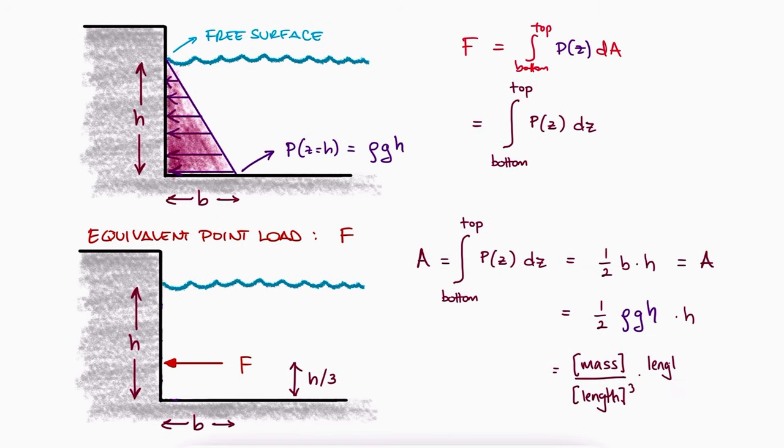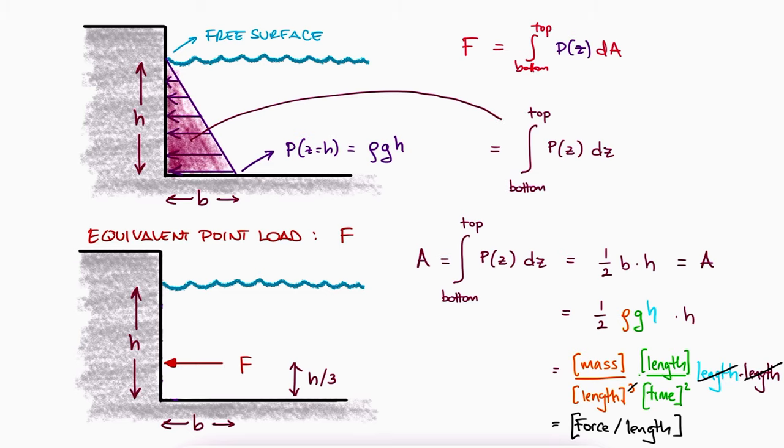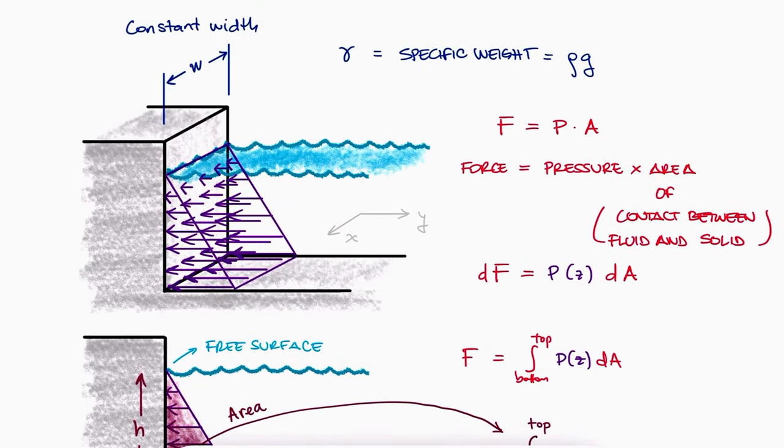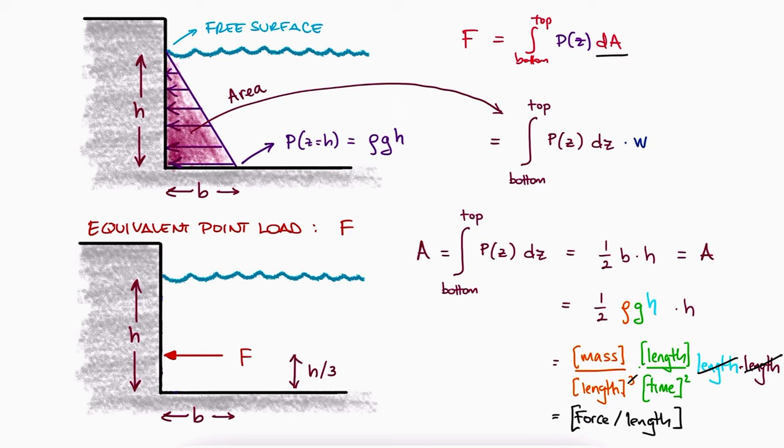Notice, however, that the units of these areas would be force over length. To find the actual force value, we would have to multiply the area of the load times the width that we mentioned before. The width that we got rid of to go from 3D to 2D. So, always remember to multiply by the width value to obtain actual force values.